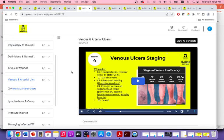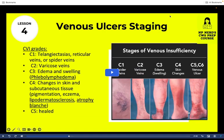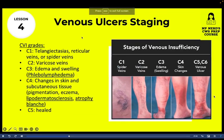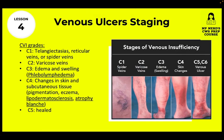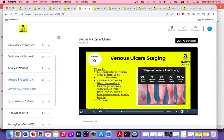Lesson 4 covers venous and arterial ulcers. Venous ulcers are not staged the same way pressure ulcers are staged. You use this staging system: C1 is spider veins, and the lesson further explains the terms with pictures so you know them for the test. Lesson 5 covers lymphedema vs. lipedema. Lymphedema happens equally in males and females and at any age, and has pitting edema, can involve cellulitis, and has a positive Stemmer sign, and can affect one or both legs. Lipedema happens mostly in females after or during puberty, has no pitting edema, no infection, negative Stemmer sign, and is always in both legs.